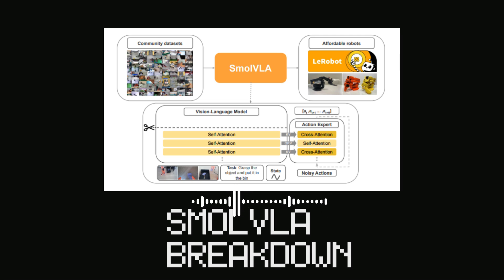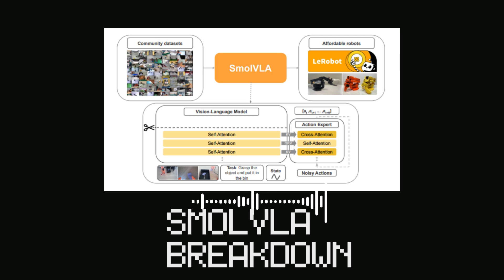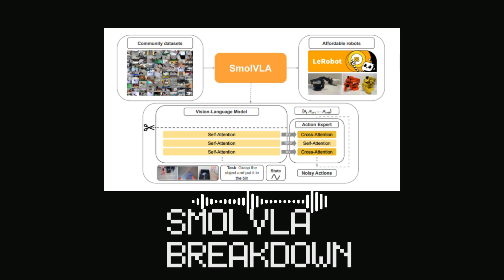It's all about making the robot react quicker and smoother. So to recap the contributions: small efficient architecture, leveraging community data, and super-fast responsive actions — that's a pretty compelling package. I'm curious though, how do they actually build this thing? What's under the hood?